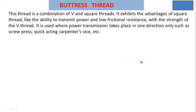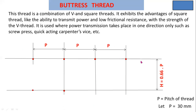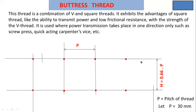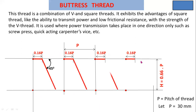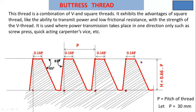Buttress thread is a combination of V and square threads. It exhibits the advantages of a square thread — the ability to transmit power under low frictional resistance — with the strength of the V thread. It is used where power transmission takes place in one direction only, such as a screw press or quick-acting carpenter's vise. This is the shape of a buttress thread.